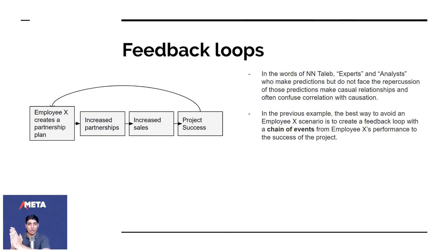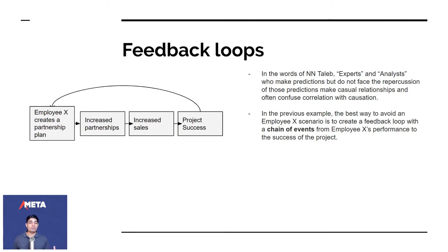Creating a chain and a feedback loop is important unless you want employee X scenarios where you misattribute certain things to certain people. What is the immediate goal? What does that lead up to? What does that lead up to? Break it down.